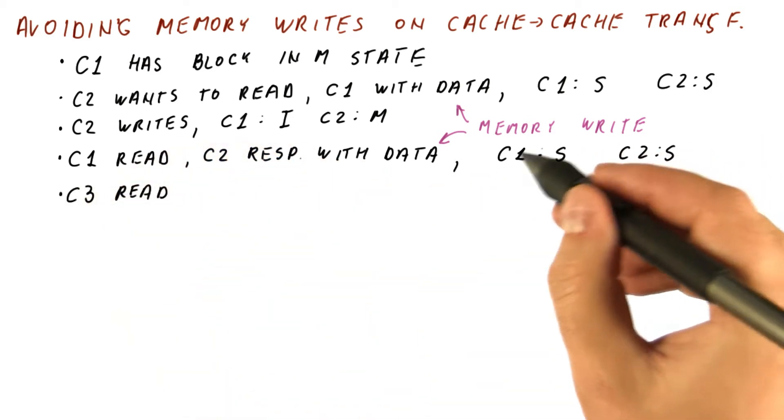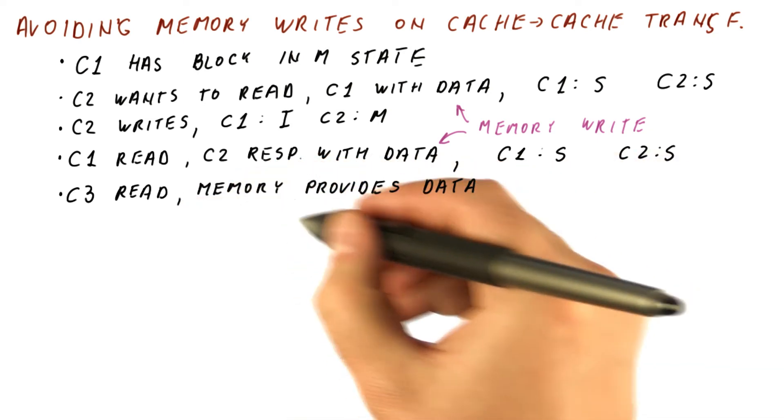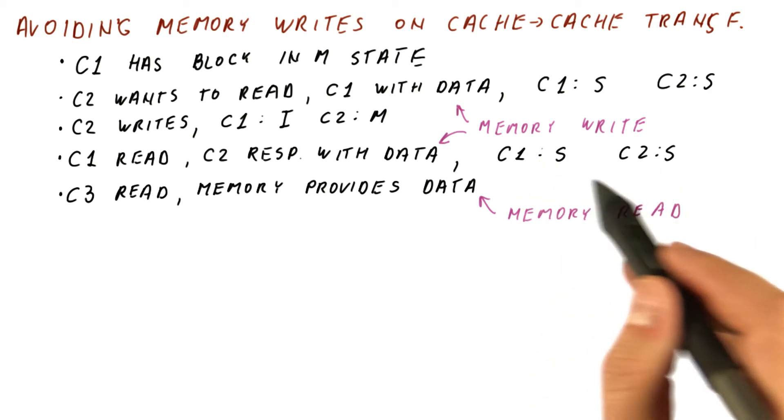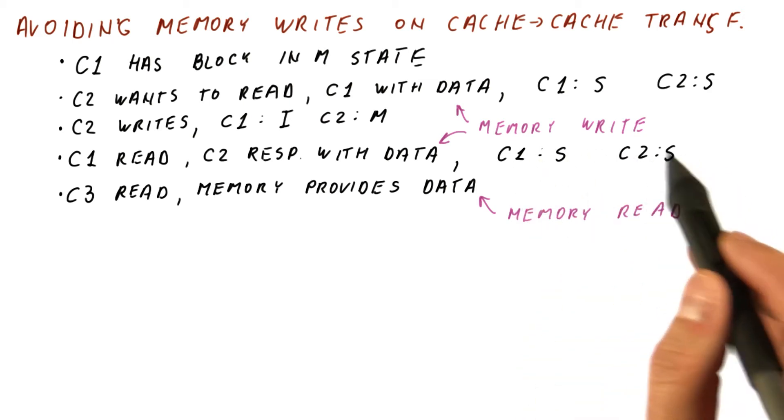Now if C3 reads, because both of these have the block in the shared state, the memory provides the data. So we have memory reads here, even though one of these could have responded with the data if we only knew which of the two should respond.